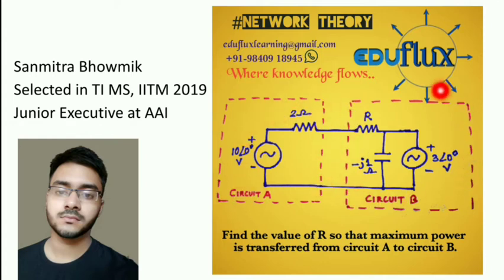And circuit B has a load, and the load itself has a voltage source that is 3 angle 0 degree, and there is a resistance here and there is a capacitor which is being connected in parallel with the load. We have to find the value of R so that maximum power is transferred from circuit A to circuit B.